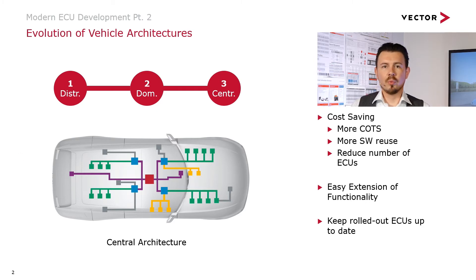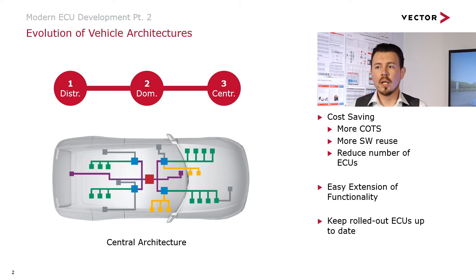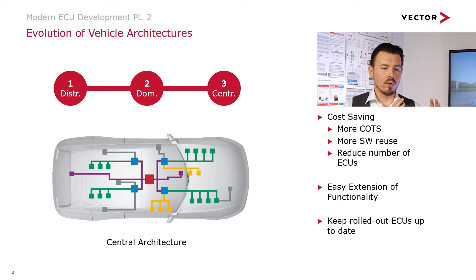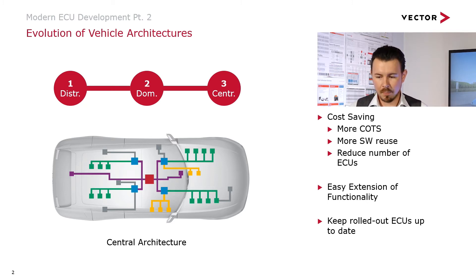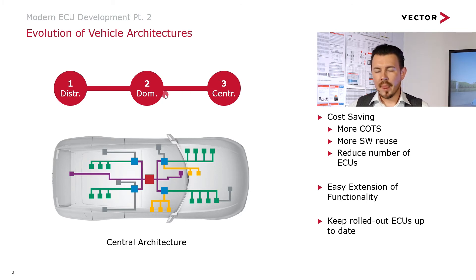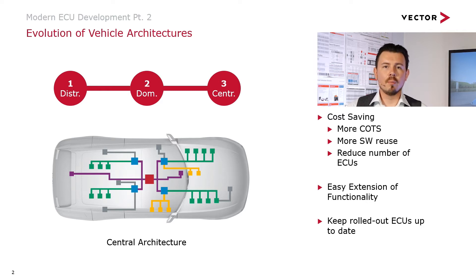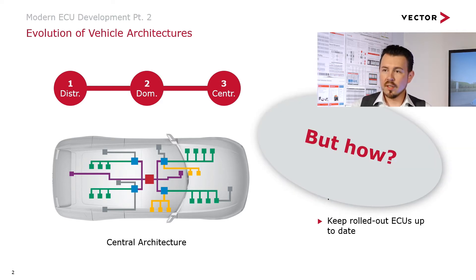With the central architecture approach, you have the maximum software reuse because you can transfer software from one vehicle line to another. You can also easily keep existing ECUs in the field up to date because they are much less hardware-dependent. Right now we are somewhere in the transition from domain to central architectures. The question is: how do you build such an ECU that leverages all of these benefits? That is exactly what this presentation is about.